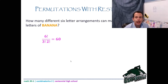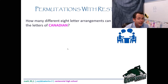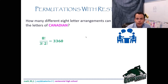Let's try Canadian — this was taken out of your book but worth discussing. I've got eight letters this time. Again, I have three A's and two N's, so I end up with 8 factorial divided by 3 factorial times 2 factorial. You should get 3,360 in your calculator.